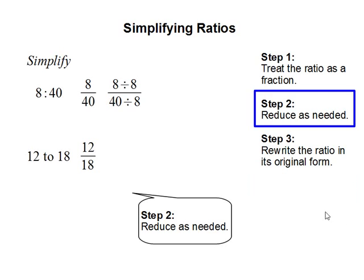Reduce as needed. 8 over 40 can be reduced by 8. 8 divided by 8 gets you 1. 40 divided by 8 gets you 5. So the resulting fraction is 1 fifth.